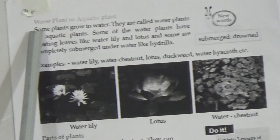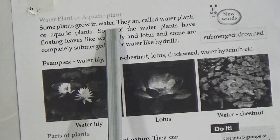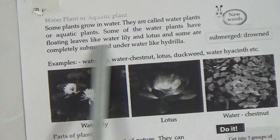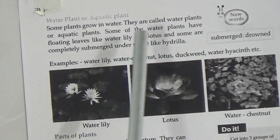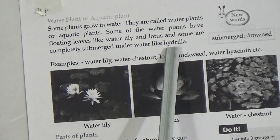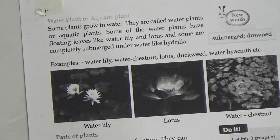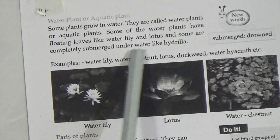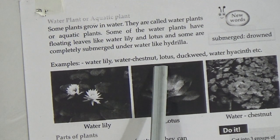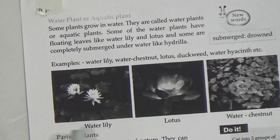Here is water plant or aquatic plant. Some plants grow in water — they are called water plants or aquatic plants. Some of the water plants have floating leaves, like water lily and lotus. Some are completely submerged under water, like hydrilla. Hydrilla is one kind of aquatic plant that is fully submerged under water. Examples include water lily, lotus, duckweed, water hyacinth, and others.